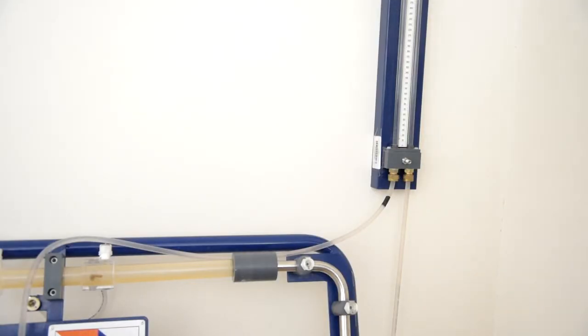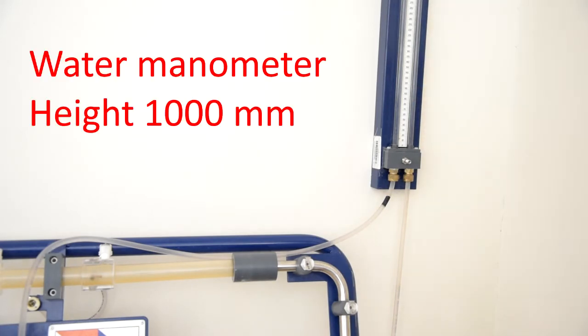This is a water manometer, which height is 1000 mm. This manometer is used to measure the head losses in the pipes.